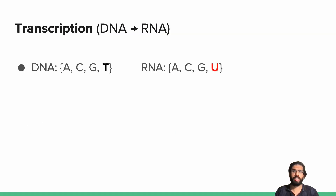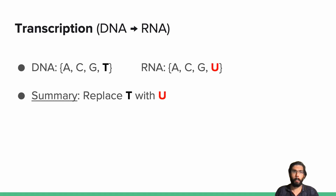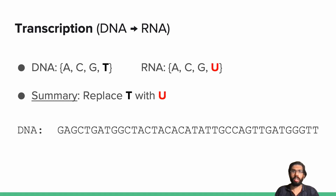DNA is transcribed into RNA and RNA is translated into proteins. For the purpose of this course, you can think of the DNA sequence as a string over the alphabet A, C, G, and T, and the RNA sequence as a string over the alphabet A, C, G, and U. The process of transcription is simply replacing all the T's in the DNA with U's, as shown below. For example, if I wanted to transcribe this DNA sequence here, I would just replace every T with U to get the corresponding RNA sequence.